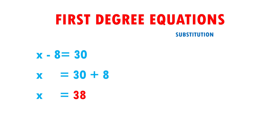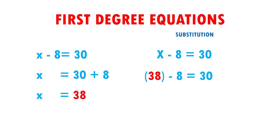I copy the same equation: x minus 8 is equal to 30. Now I put 38, which is the value of x, minus 8, is equal to 30. Once subtracting 38 minus 8, it gives me 30, and this is equal to 30. Therefore, I can say that the result of my equation is correct, because both sides are the same. Very easy, right?